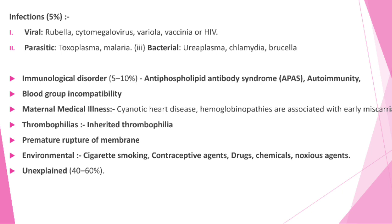Environmental causes include cigarette smoking, contraceptive agents, drugs, chemicals, and radiation. Unexplained causes account for 40 to 60 percent of miscarriages, and it is indeed difficult in the majority to pinpoint the exact cause.